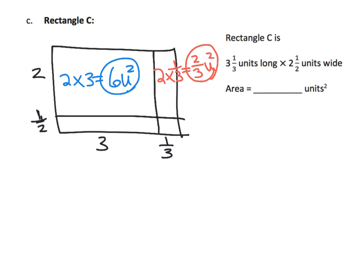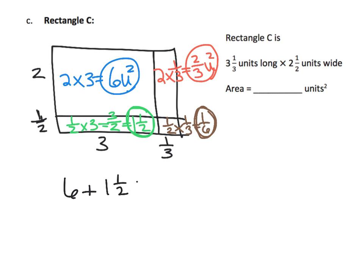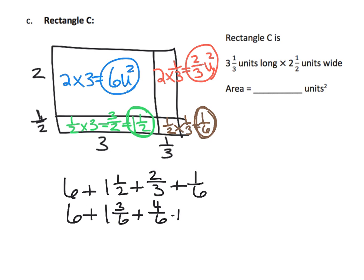The bottom-left section has a height of one-half and a width of three: one-half times three equals three-halves, which is one and one-half square units. The last small piece has a height of one-half and a width of one-third, giving one-sixth square unit. Adding all partial products: six plus one and a half plus two-thirds plus one-sixth, converting to common denominators: six plus one and three-sixths plus four-sixths plus one-sixth.